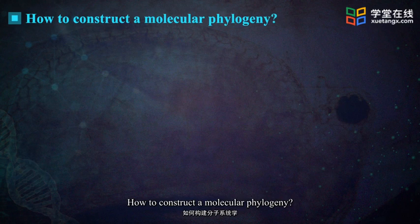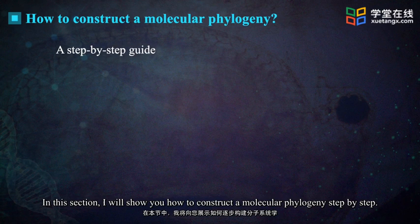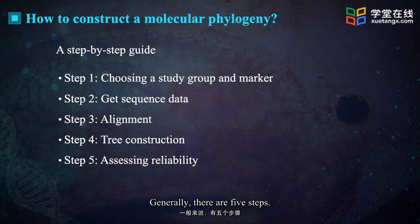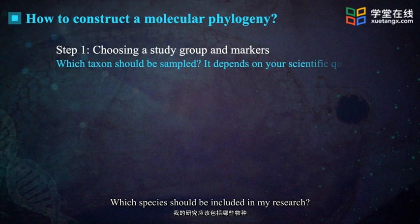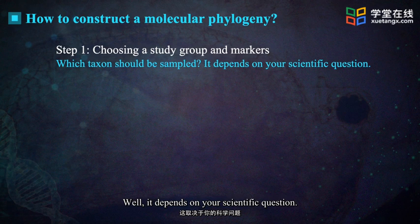How to construct a molecular phylogeny? In this section, I will show you how to construct a molecular phylogeny step by step. Generally, there are five steps. Step 1: choosing your study species and markers. Which species should be included in my research, and which molecular markers should I use? Well, it depends on your scientific question.